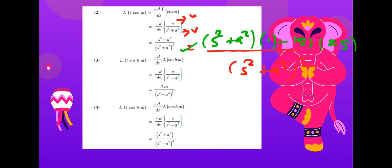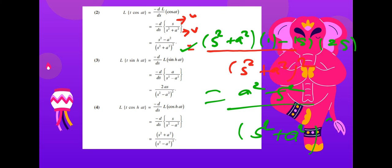With the negative sign in front: minus into minus gives plus, then simplified. The final answer for the Laplace transform of t·cos(at) is (s² - a²)/(s² + a²)².